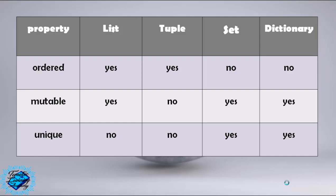Tuple is ordered. Set is not ordered. Dictionary is not ordered. List is mutable. Tuple is not mutable. Set is mutable. Dictionary is mutable. List is not unique. Tuple is not unique. Set is unique.